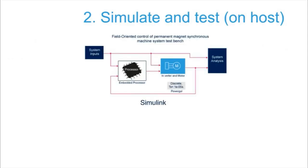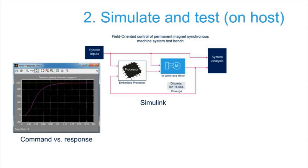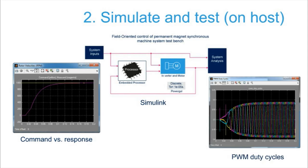The next step is to evaluate whether the system and control algorithm behave in the expected manner. In this case, the controller is supposed to ramp up the motor to 1000 RPM. In the left window we see the command value, and in the right window is the simulation result. We see the resulting PWM duty cycles generated by the controller and can verify that the system is behaving as expected.